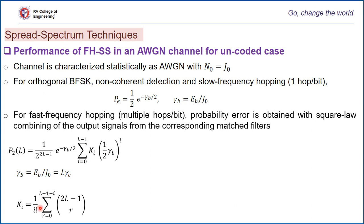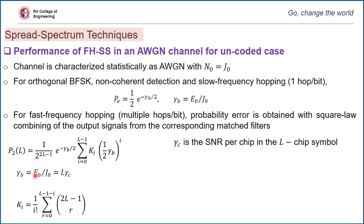In this expression, ki is a multiplicative factor inside the summation given as (1/i!) · Σ(r=0 to l−1−i) C(l−1, r), a combinatorial factor. γc is the SNR per chip, and γb is the signal-to-noise ratio with respect to bit energy. Each symbol is divided into l chips, which is the case with fast frequency hopping where each symbol takes multiple frequencies.